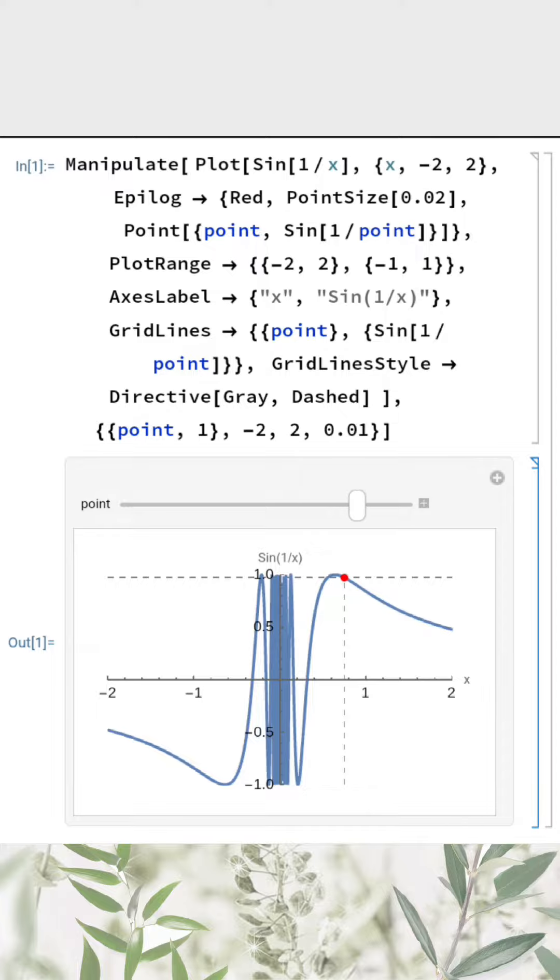Because the function keeps rapidly swinging without settling, there isn't a single value that the function approaches as x gets close to zero. Therefore, we see the limit of sin(1/x) as x approaches zero doesn't exist.